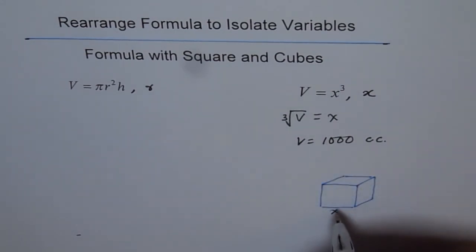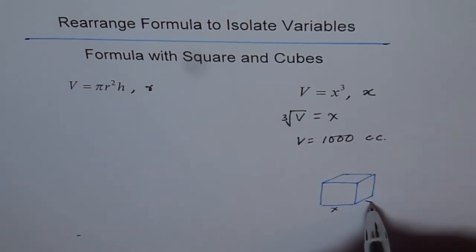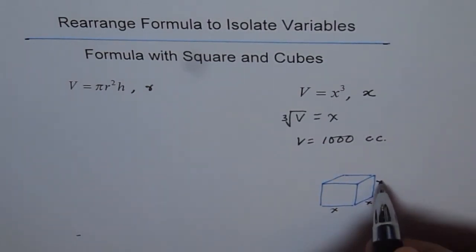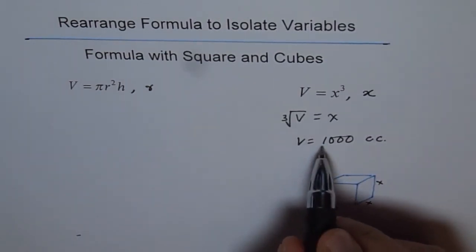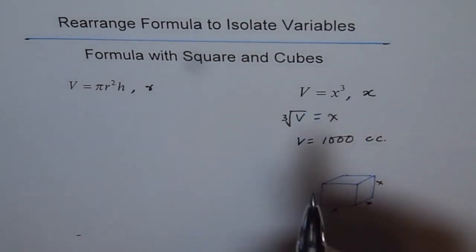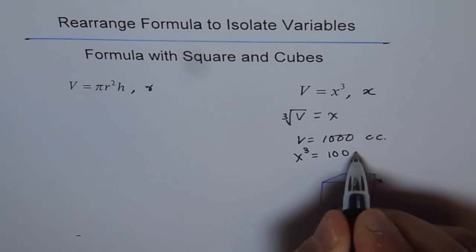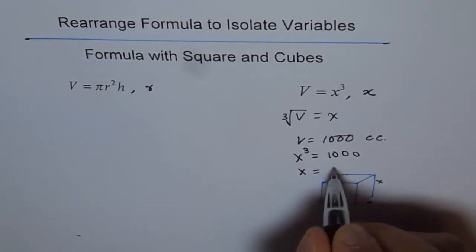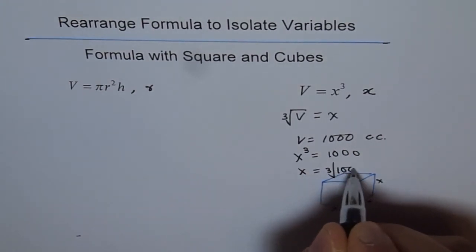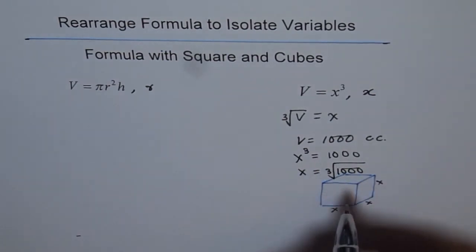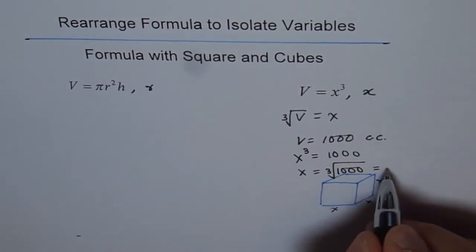So we say, well, the volume should be length into width into height which is X cube. So we say volume is 1000 which is volume is X cube. So we say X cube equals to 1000. So X is equals to cube root of 1000. Cube root of 1000, if you use calculator you get the answer as 10.